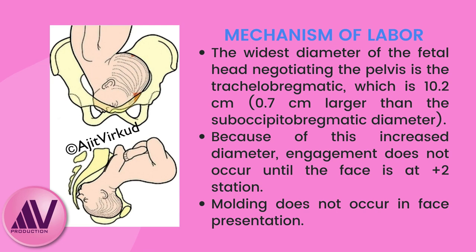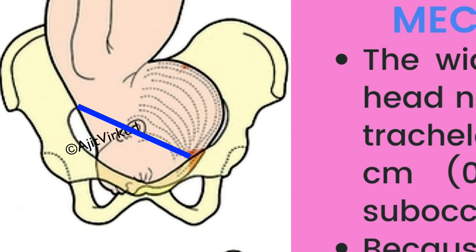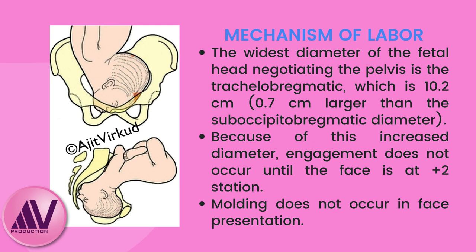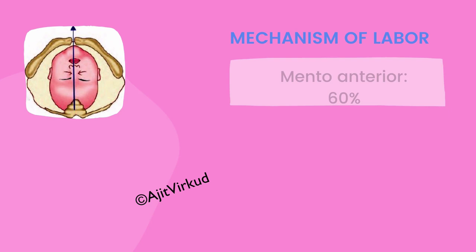Mechanism of labor in face presentation is as follows. The widest diameter of the fetal head negotiating the pelvis is the trachelобregmatic, which is 10.2 centimeters — 0.7 centimeters larger than the suboccipitobregmatic diameter. Because of this increased diameter, engagement does not occur until the face is at plus 2 station. Please note that molding cannot occur in face presentation.